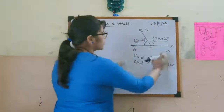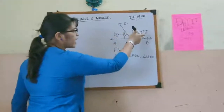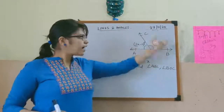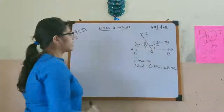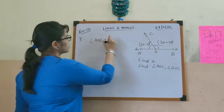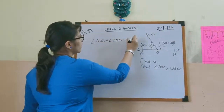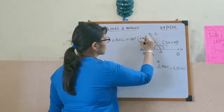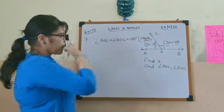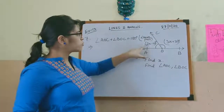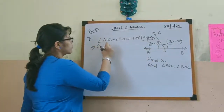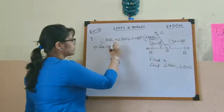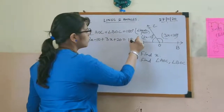Since AOP is a straight line, the two angles on either side form a linear pair. So angle AOC plus angle BOC equals 180 degrees — reason: linear pair. Substituting: (2x minus 10) plus (3x plus 20) equals 180.